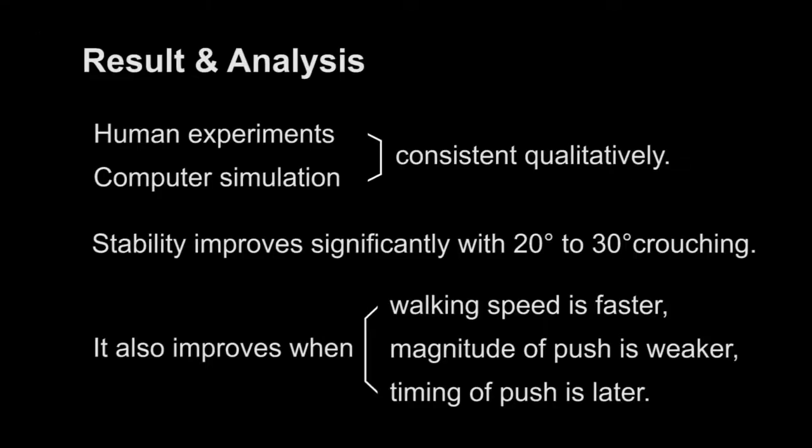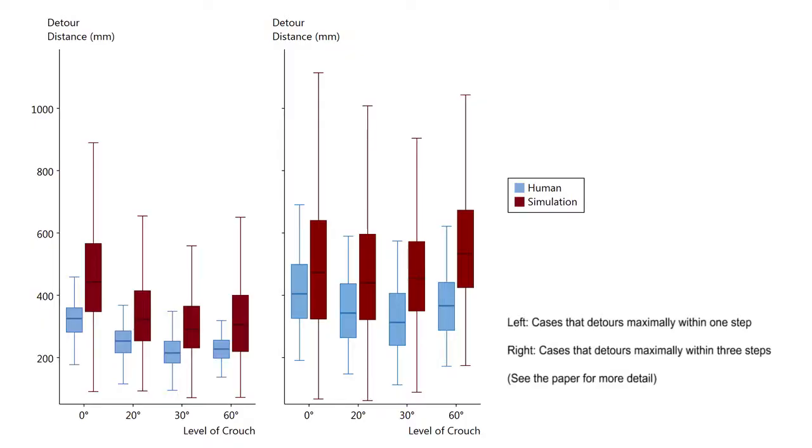The experimental results from human subjects and computer simulations are consistent qualitatively with each other. The human subjects and the simulated biped recovered their balance quickly and detoured less when they walked in 30-degree crouch.